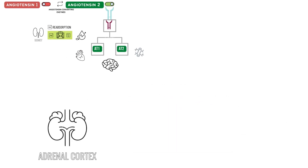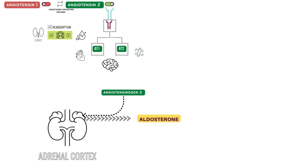Next, the adrenal cortex. Angiotensin 2 specifically affects the zona glomerulosa in the adrenal cortex, where it stimulates aldosterone to be released. Here, the third player of the RAS system comes into play: aldosterone.